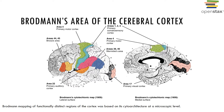The left brain possesses the general interpretive and speech centers and is important in language-based skills as well as reading, writing, speaking, math, and logic. The cerebral cortex contains three functional areas: a motor area, which controls voluntary motor functions; a sensory area, which provides conscious awareness of sensations; and an association area, which integrates all sensory and motor information. No functional area of the brain acts alone, and conscious behavior involves the entire cerebral cortex in one way or another.